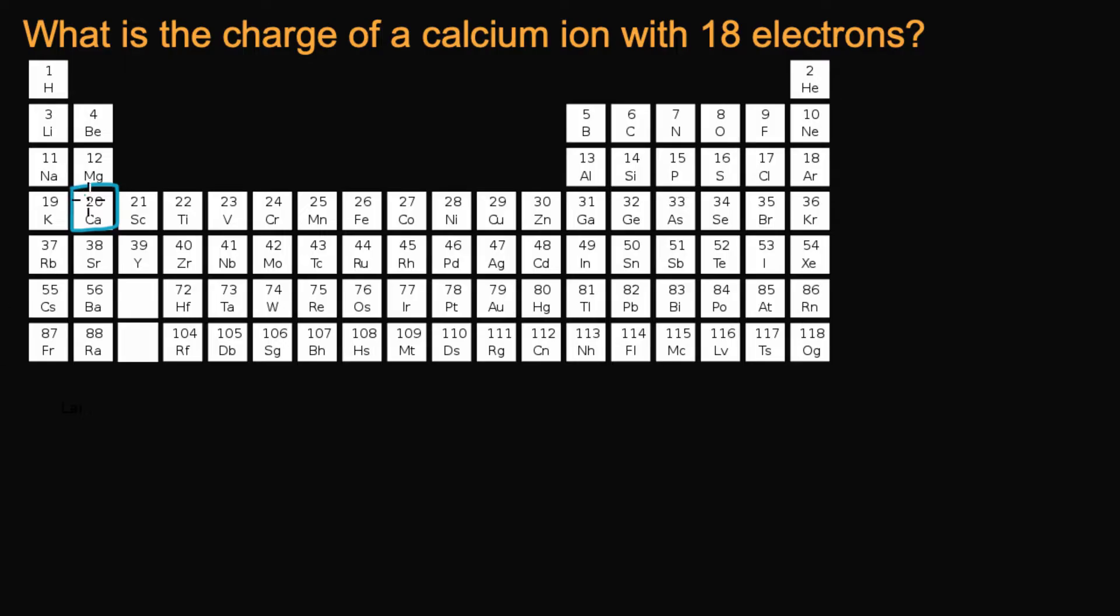All right, so what defines the element is actually how many protons it has. And that's what we have right over here. Its atomic number is 20. That's how many protons it has. So we could say number of protons, which provide positive charge, is 20.